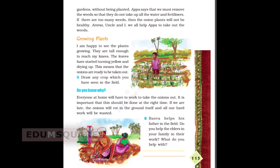Growing plants — I am happy to see the plants growing. They are tall enough to reach my knees. The leaves have started turning yellow and drying up. This means that the onions are ready to be taken out. I may not go to school for the next few days since I will also need to help. Everyone at home will have to work to take the onions out. It is important that this should be done at the right time. If we are late, the onions will rot in the ground itself and all our hard work will be wasted.